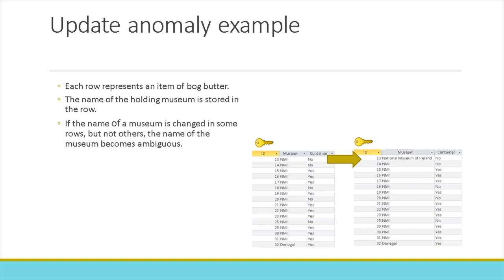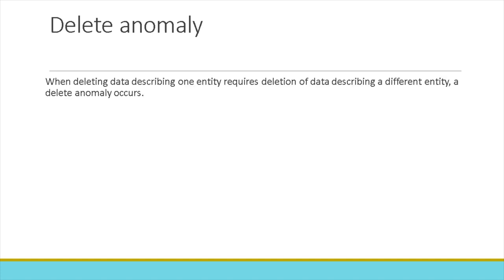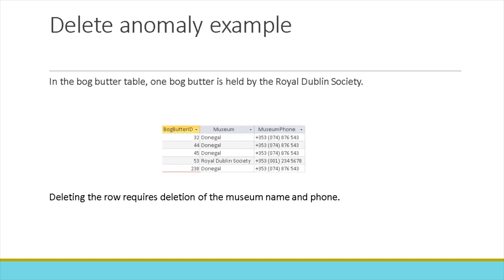A delete anomaly occurs when deleting data describing one entity requires the deletion of data describing a different entity. For example, in the bog-butter table, we have one bog-butter held by the Royal Dublin Society. We have the bog-butter ID, the name of the museum, and the phone number of the museum. If we delete the row for the bog-butter held by the Royal Dublin Society, we also delete the museum's name and phone number.